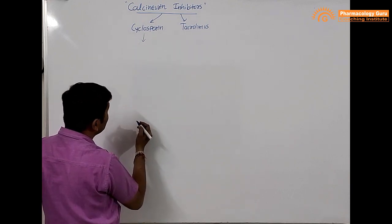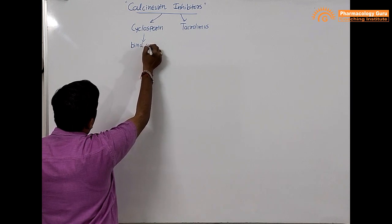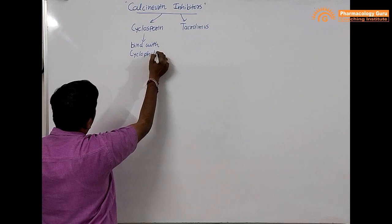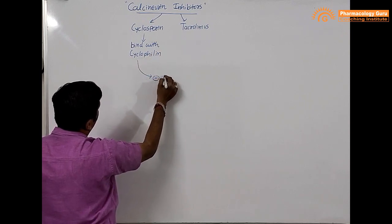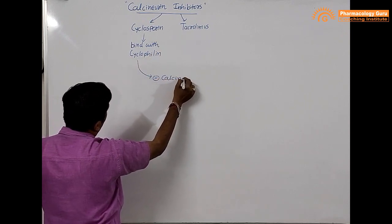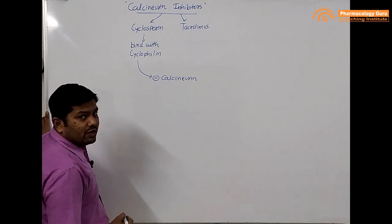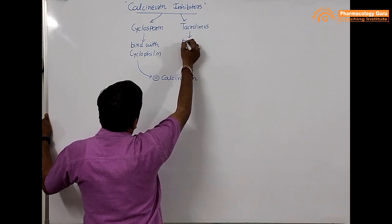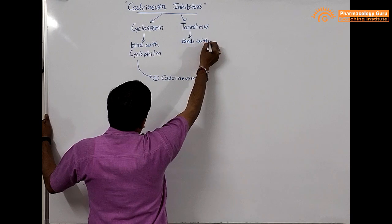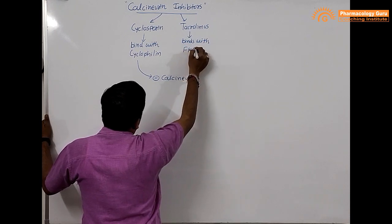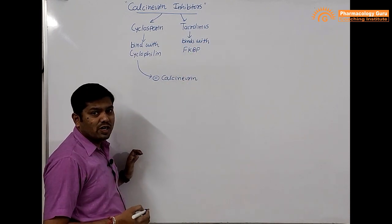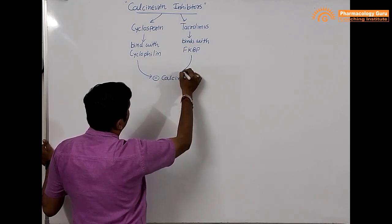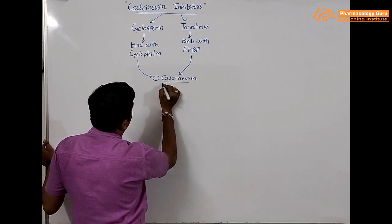When cyclosporine is taken, it enters into the helper T cell where it binds with a protein called cyclophilin, and this complex inhibits calcineurin activity. Tacrolimus, when given, binds with the protein FKBP — the FK506 binding protein — and this whole complex also inhibits calcineurin.